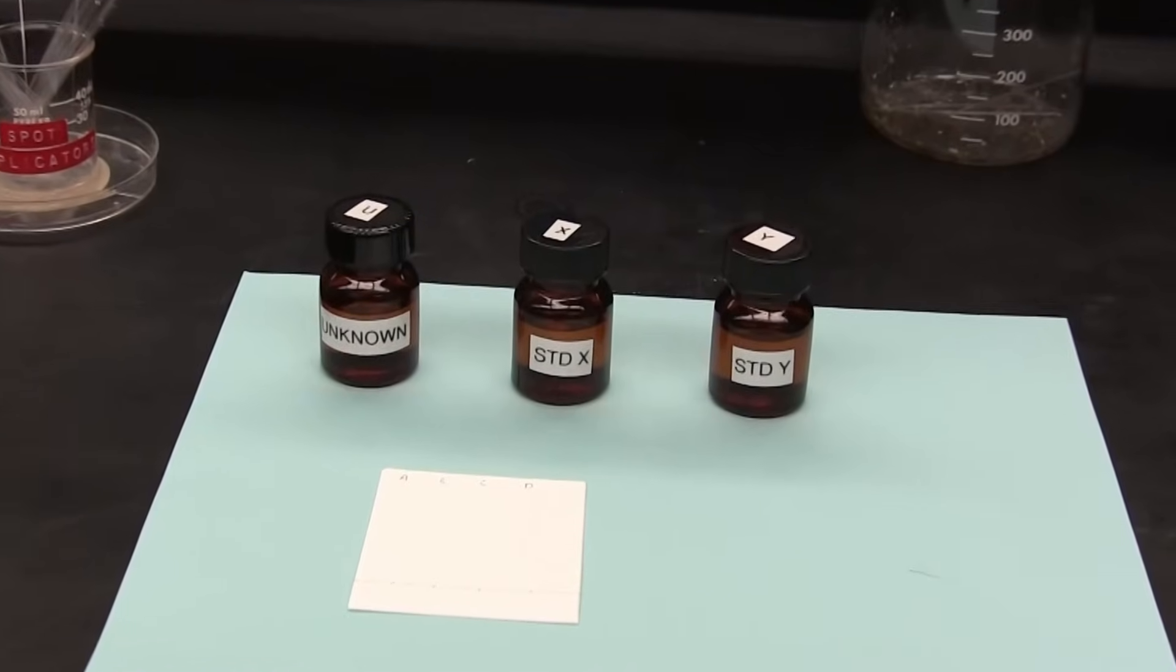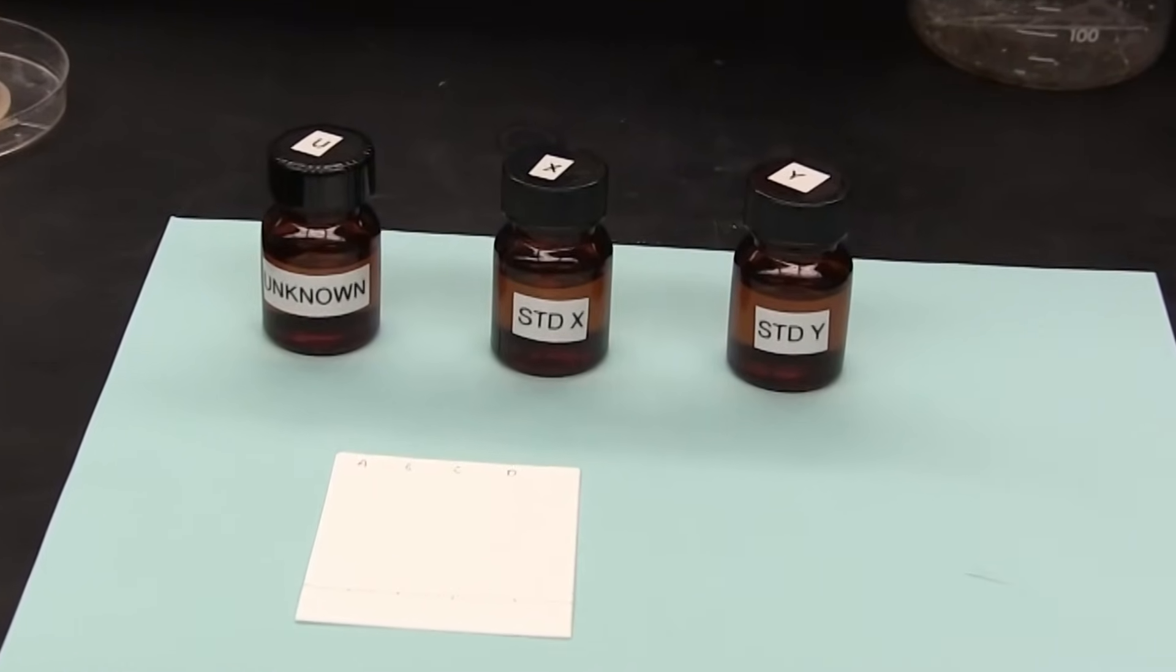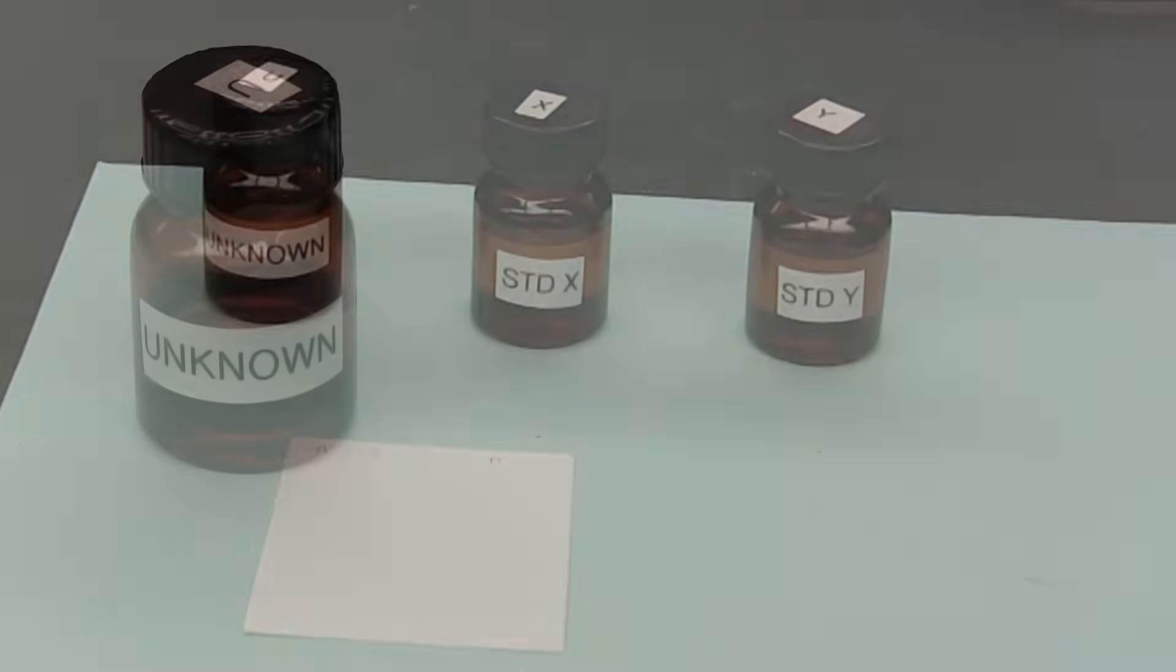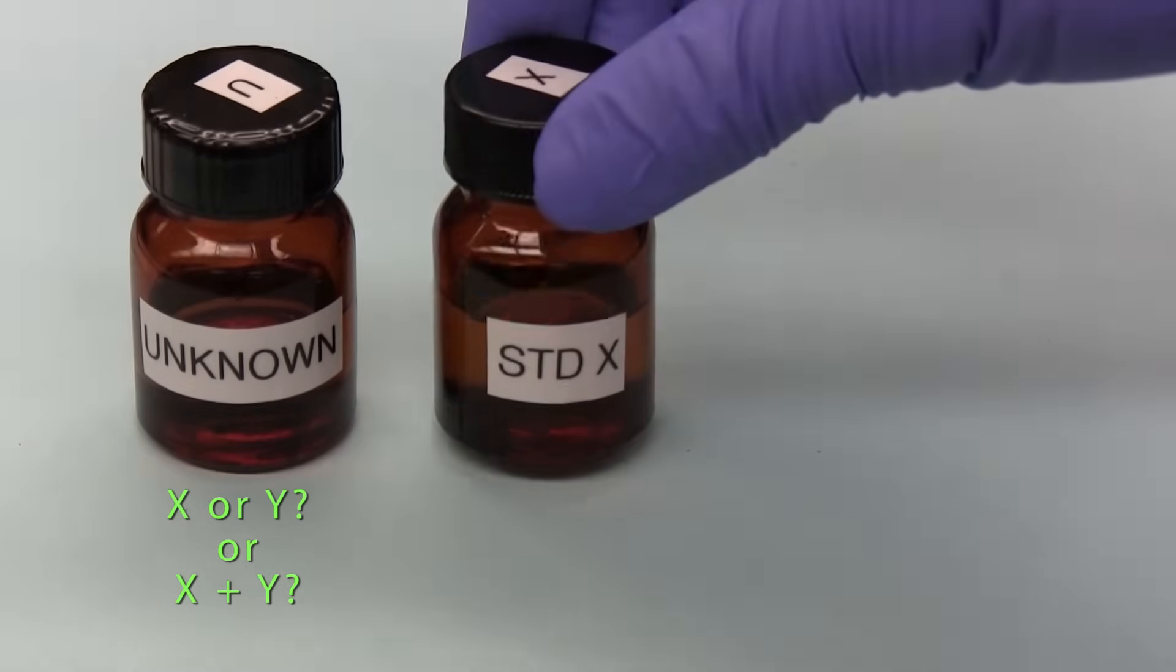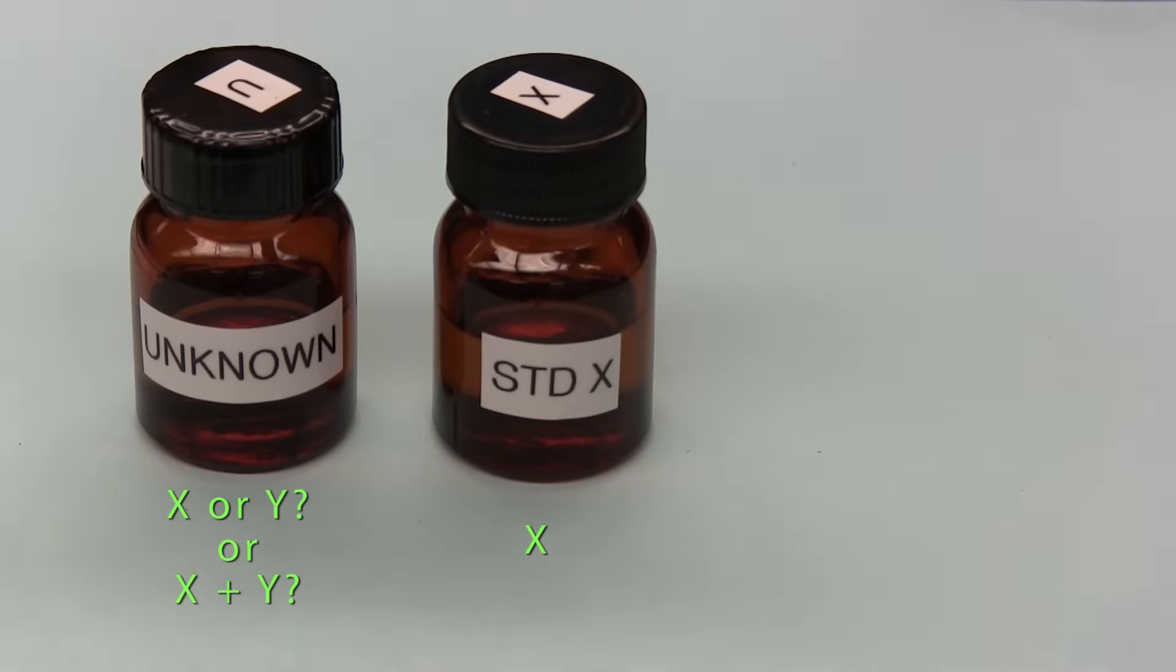In this demonstration, we are going to see how to separate and identify using TLC. In this bottle, the identity of the contents is unknown, but we do know that it contains either compound X or compound Y, or even a mixture of both. In this bottle, we have an authentic sample of compound X, a sample which we know beyond any doubt is compound X, so we call it standard X. This is our first reference.